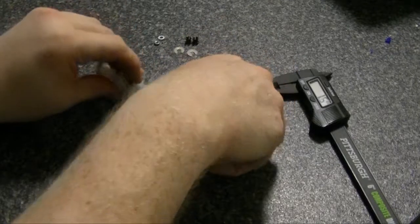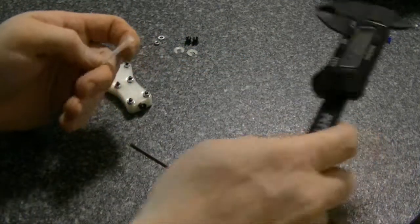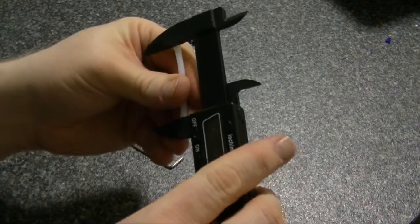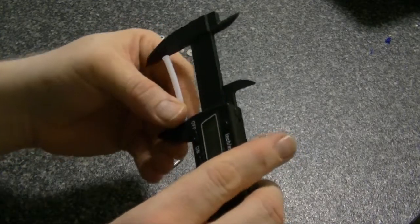Then we're going to take a 50 millimeter piece of PTFE tubing and you want to make sure it's at exactly 50 millimeters.